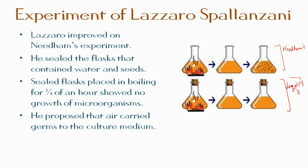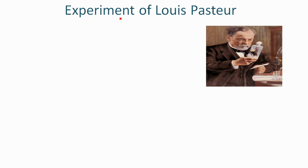Spallanzani also commented that external air might be required for the growth of animals already in the medium. The supporters of spontaneous generation maintained the theory by saying that heating the air in sealed flasks destroyed its ability to support life. Further experiments by Schwann and Felix Pouchet claimed that microbial growth could occur without air contamination.